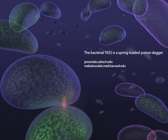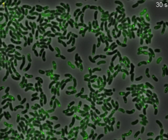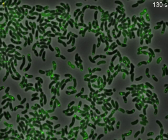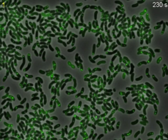The bacterial type 6 secretion system is a spring-loaded poison dagger. Certain Vibrio cholerae strains, like the one seen here, harbor the type 6 secretion system.